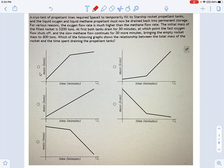And I want to know which one of these graphs represents the mass in the rocket, or the mass of the rocket, tanks, wings, everything, over time.